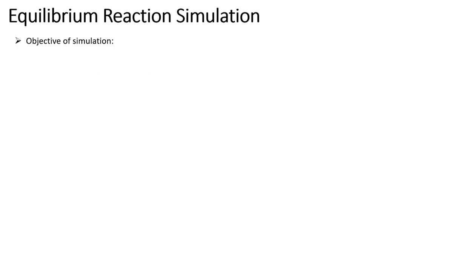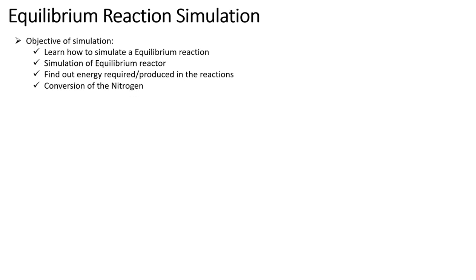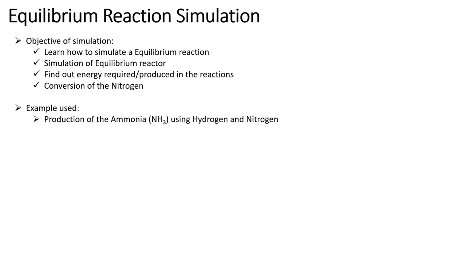Our objective of this simulation is to learn how to simulate the equilibrium reaction, simulate an equilibrium reactor, and understand how energy is required or produced during the reaction. We are going to use the Haber process — the production of ammonia from nitrogen and hydrogen.